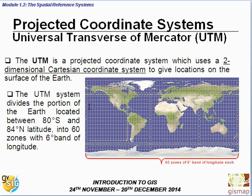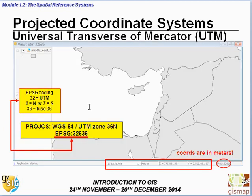As mentioned, the UTM — Universal Transverse Mercator — is a projected coordinate system which uses a two-dimensional Cartesian coordinate system to give locations on the surface of the Earth. The UTM divides the portion of the Earth between 80 degrees south and 84 degrees north into 60 zones with 6-degree bands each. For example, the Middle East area falls in zone 36. The corresponding EPSG code for this zone is shown in the next slide.